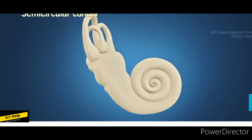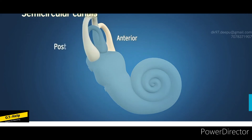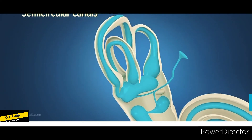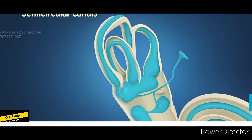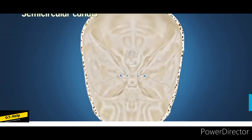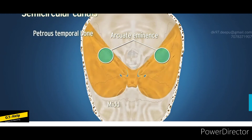There are three bony semicircular canals: anterior, posterior, and lateral. Each canal is about two-thirds of a circle and is dilated at one end to form the ampullae. The three canals open into the vestibule through five openings. The anterior semicircular canal lies at right angle to the long axis of the petrous temporal bone and is convex upwards. It produces the arcuate eminence on the anterior surface of the petrous temporal bone in the middle cranial fossa.